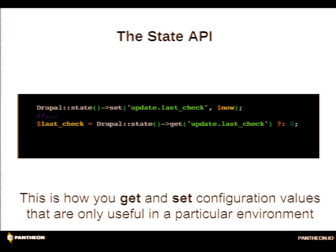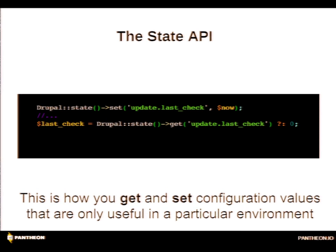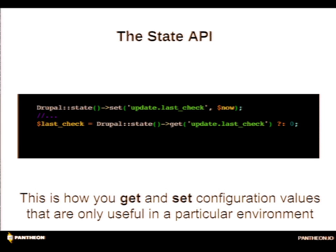Sometimes you've got values you don't necessarily want in the configuration — like what Brant was saying — if you have a developer and you want a development API key for Google Analytics but don't want that to be part of the configuration you deploy to production, you can use a State API that sets things like last cron run time or developer API keys — settings you need to run the site but don't want in version control as part of what you deploy.